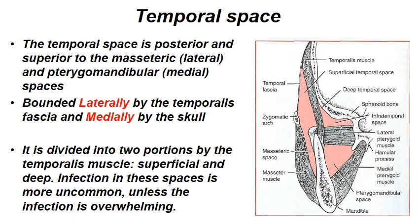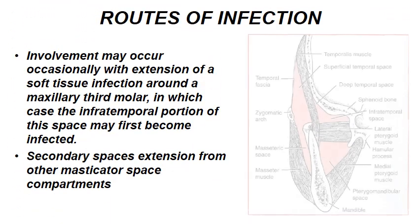Last but not least, the temporal space — it is posterior and superior to the masseteric and pterygomandibular spaces. It is bounded laterally by the temporalis fascia and medially by the skull bone. It is divided by the temporalis muscle into superficial and deep temporal spaces. Infection in these spaces is uncommon unless the infection is overwhelming; they usually act as secondary spaces and do not receive infection directly from the offending teeth. Sources of infection: involvement of the maxillary third molar leads to infratemporal space infection, which in turn spreads to the deep temporal and superficial temporal spaces. Involvement of other masticator spaces like the pterygomandibular and masseteric spaces may also lead to secondary involvement of the temporal space.